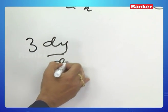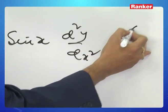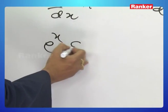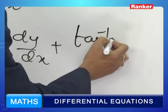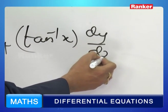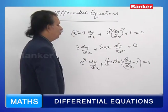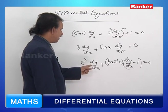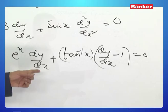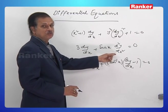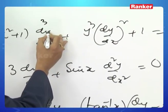The second equation is: 3 dy by dx plus sin x into d square y by dx square, is equal to 0. One more: e power x plus tan inverse x into dy by dx, 3 tan inverse x into dy by dx minus 1, is equal to 0. In this third equation, dy by dx only is present — that is, only the first order differential coefficient is present. In the second equation, the second order derivative d square y by dx square is also there. Let me change this to d cube y by dx cube.